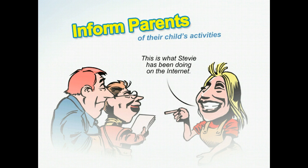Another way to make your classroom CIPA compliant is to inform the parents of their child's activities. Because your technology protection measure must monitor students, the parents have a right to access their child's Internet records. Also, be sure to let the parents and students know that all emails sent by the students can be tracked and monitored.